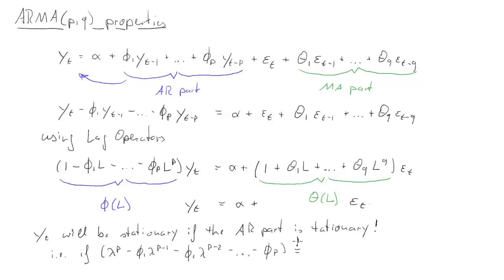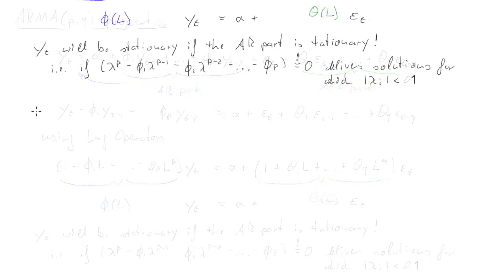Y_t will be stationary in that process if the autoregressive part is stationary, that means if that characteristic equation delivers solutions which in absolute values are smaller than 1. That's what we know anyway about the stationarity conditions of AR processes, nothing has changed here.